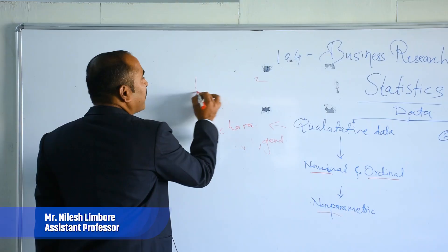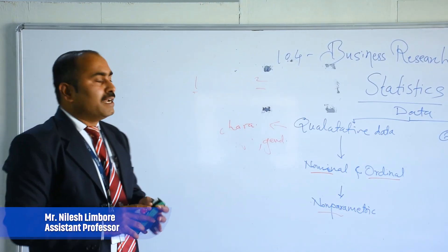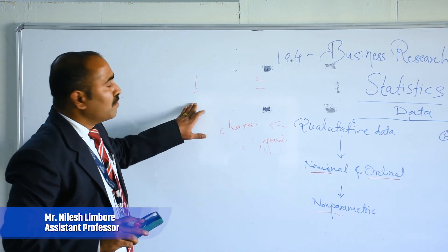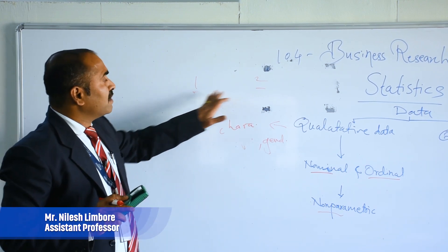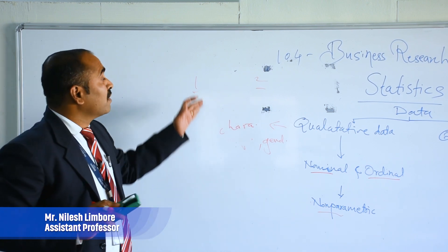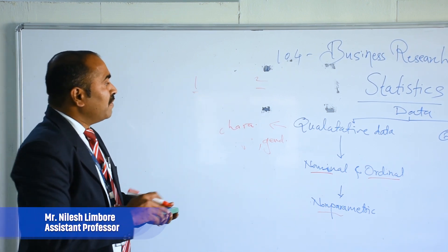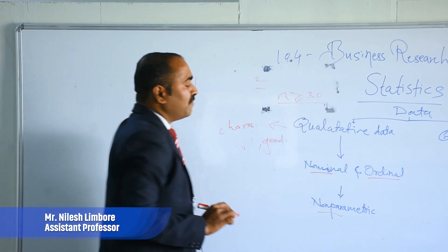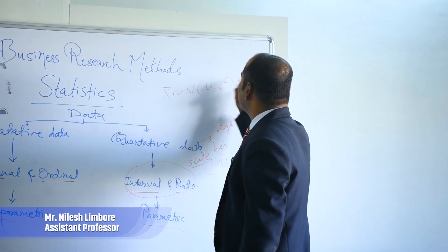In non-parametric testing, if we want to check whether there is any significant relationship between a first and second factor where the data is ordinal scale, we can use the R by C contingency chi-square test or chi-square goodness of fit. If the sample size is greater than or equal to 30, then we say that our sample follows the normality condition — meaning x-bar follows a normal distribution with mean mu and variance sigma squared.